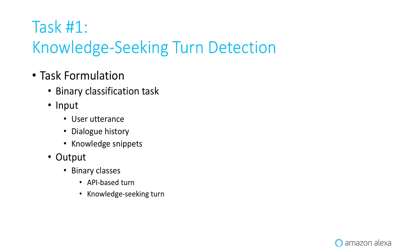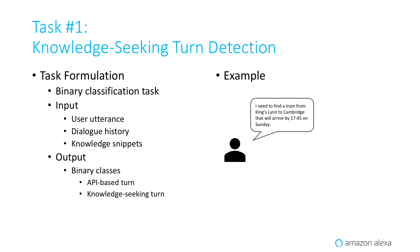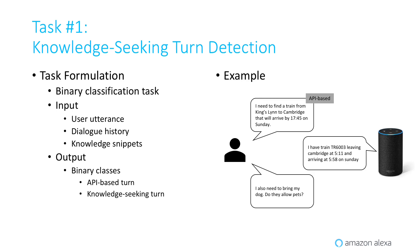The first task is knowledge-seeking turn detection, which is basically a binary classification task. The input includes the user turns, dialogue history, and knowledge snippets. The goal is to determine whether a given turn is an API-based or knowledge-seeking turn. For example, the first user turn here is an API-based turn, while the second user turn is seeking external knowledge.